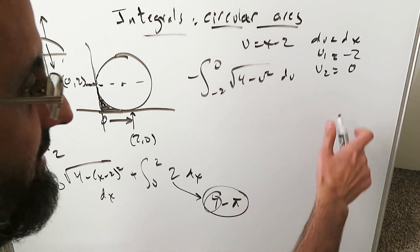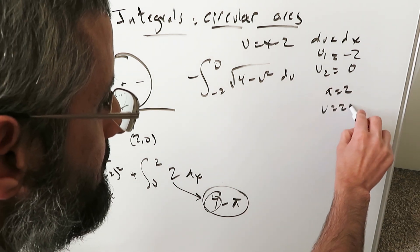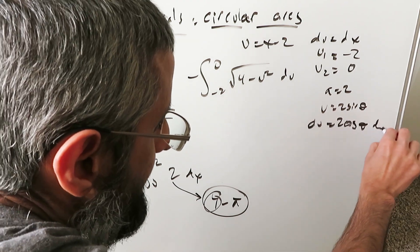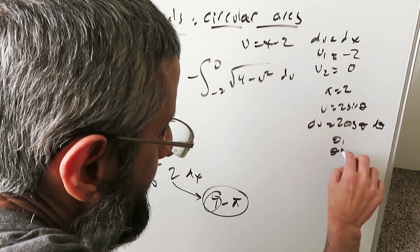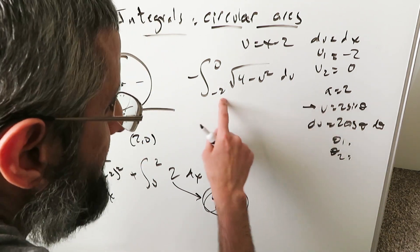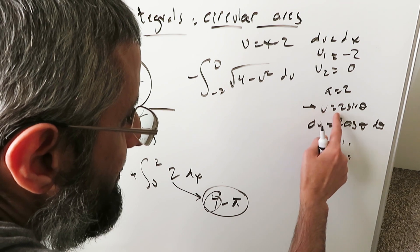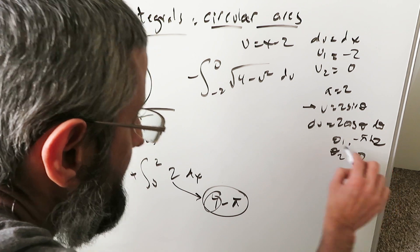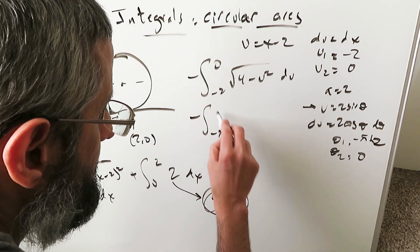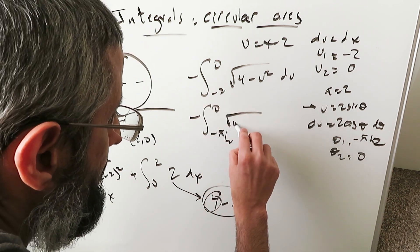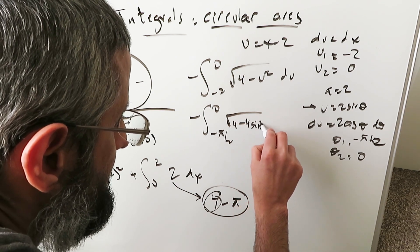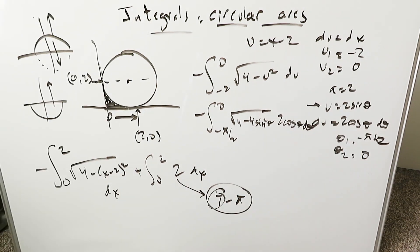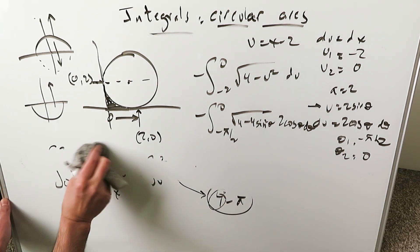You can then do trigonometric substitution. With a equal to 2, let u equal 2 sine theta, so du equals 2 cosine theta d theta. New limits: theta 1 equals inverse sine of minus 1, which is minus pi over 2; theta 2 equals inverse sine of 0, which is 0. So it becomes minus, from minus pi over 2 to 0, of square root of 4 minus 4 sine squared theta times 2 cosine theta d theta.